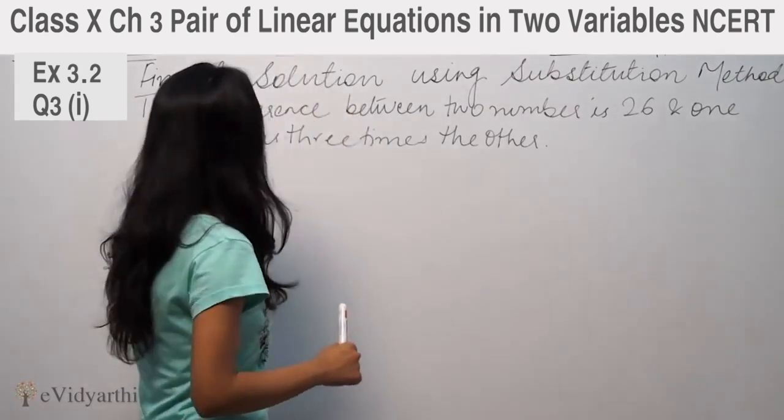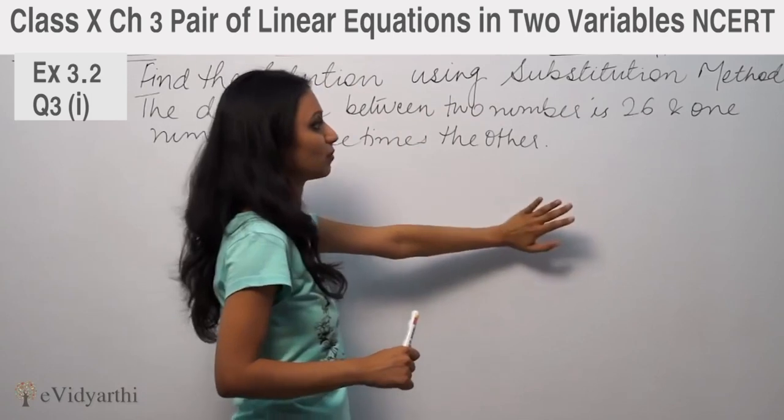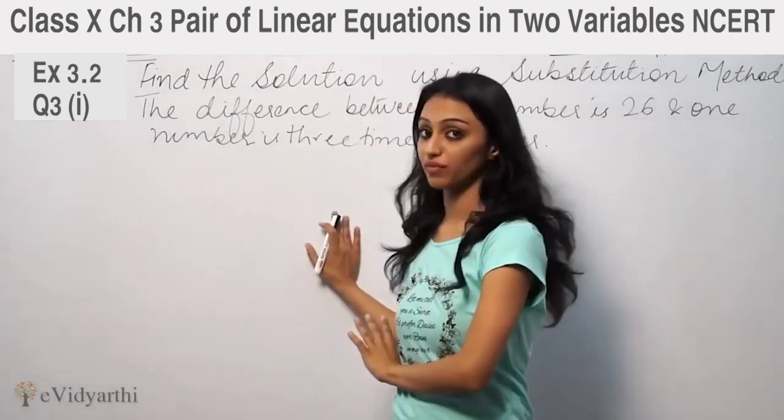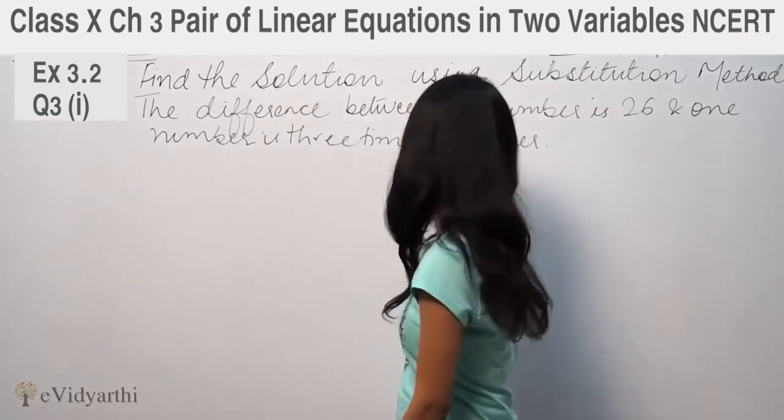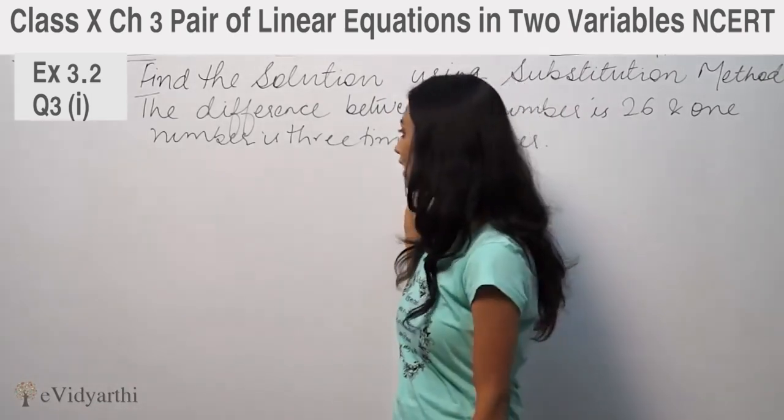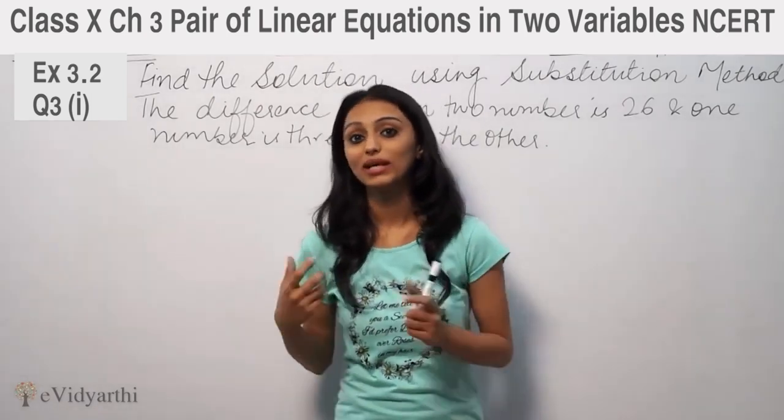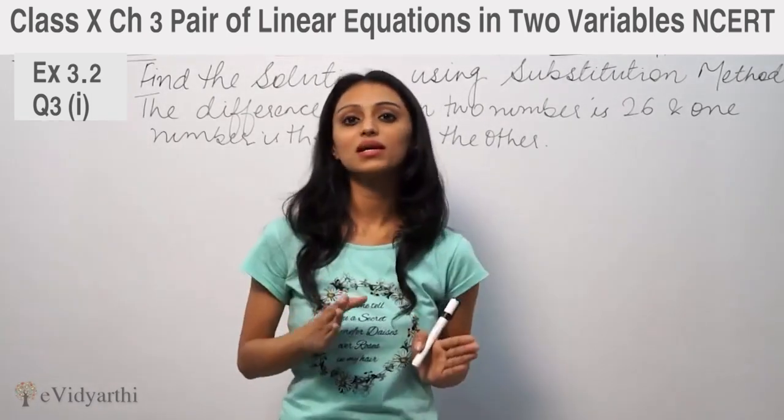It says, find the solution using substitution method. Use the substitution method first. The difference between two numbers is 26 and one number is 3 times the other.